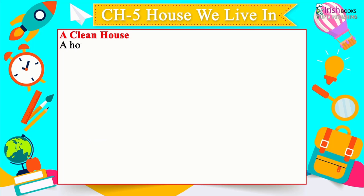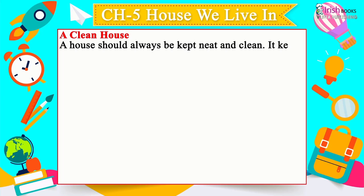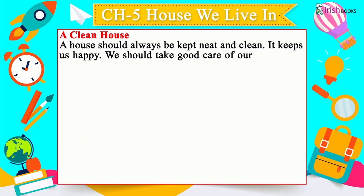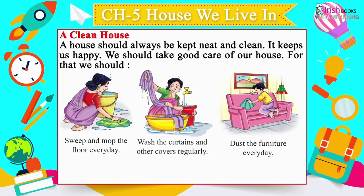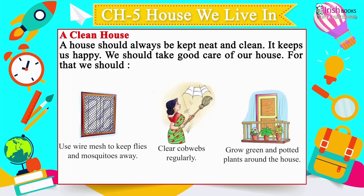A Clean House: A house should always be kept neat and clean — it keeps us happy. We should sweep and mop the floor every day, wash curtains and covers regularly, dust furniture every day, use wire mesh to keep flies and mosquitoes away, and clear cobwebs regularly. Growing green and potted plants around the house is also recommended.